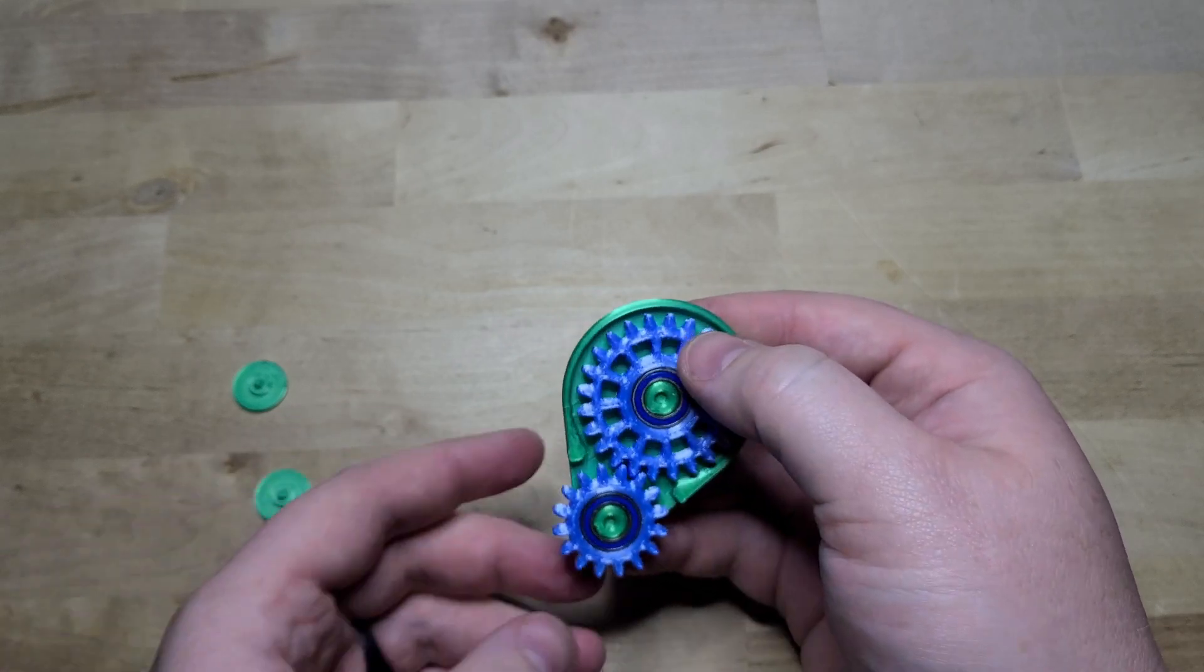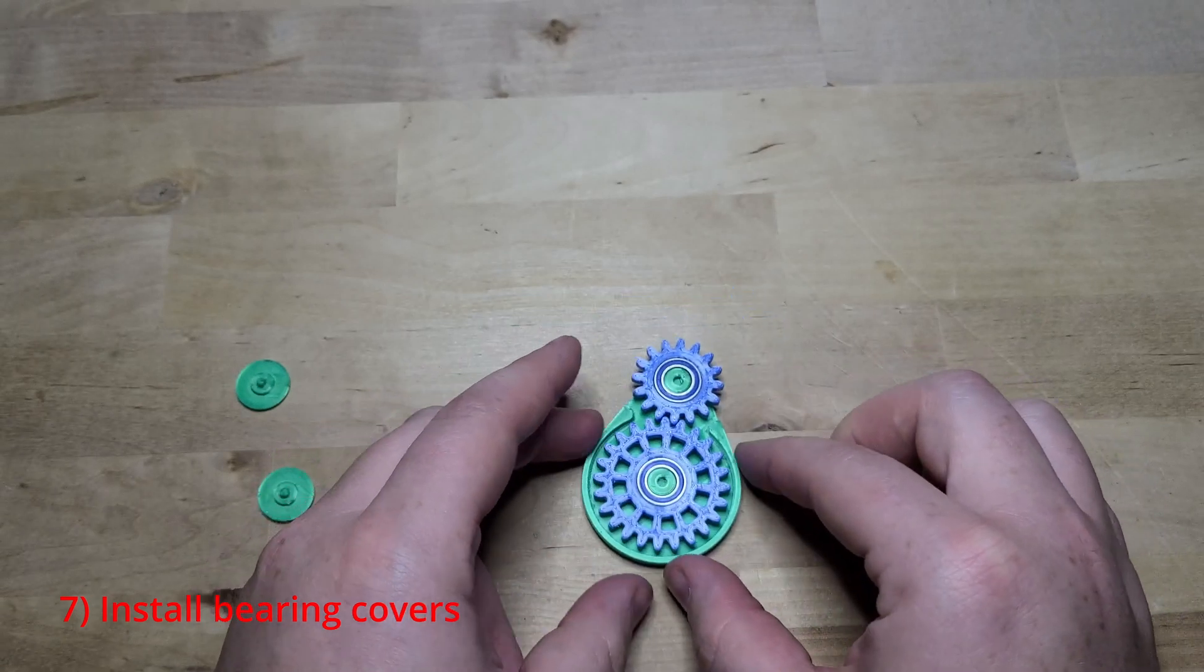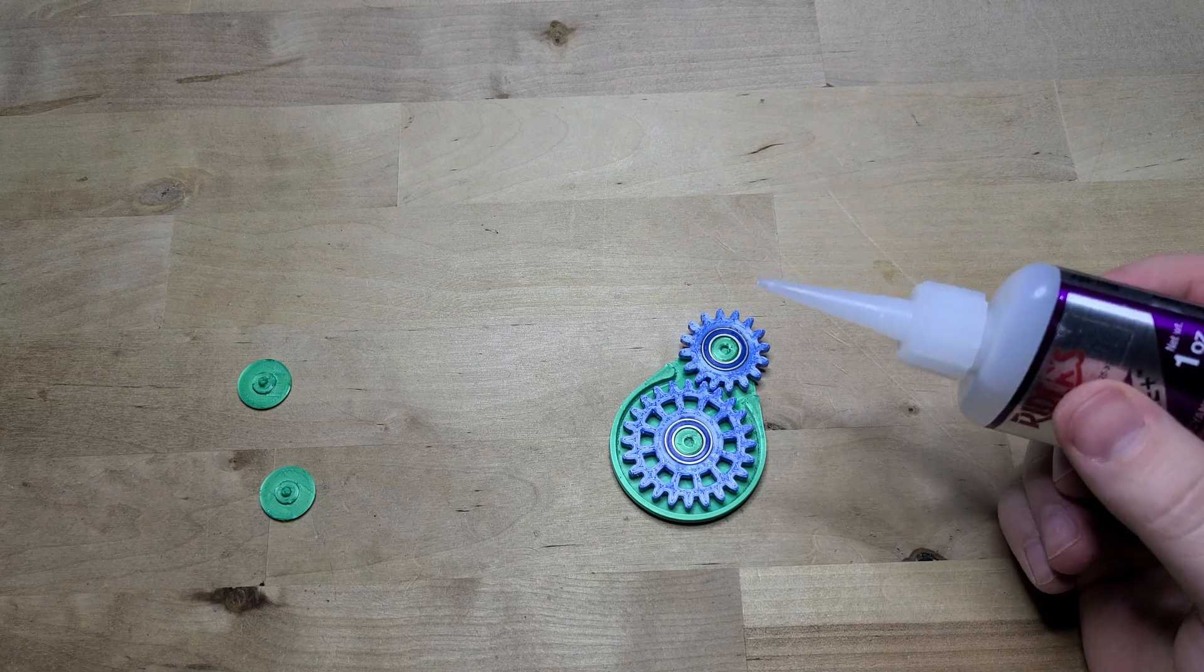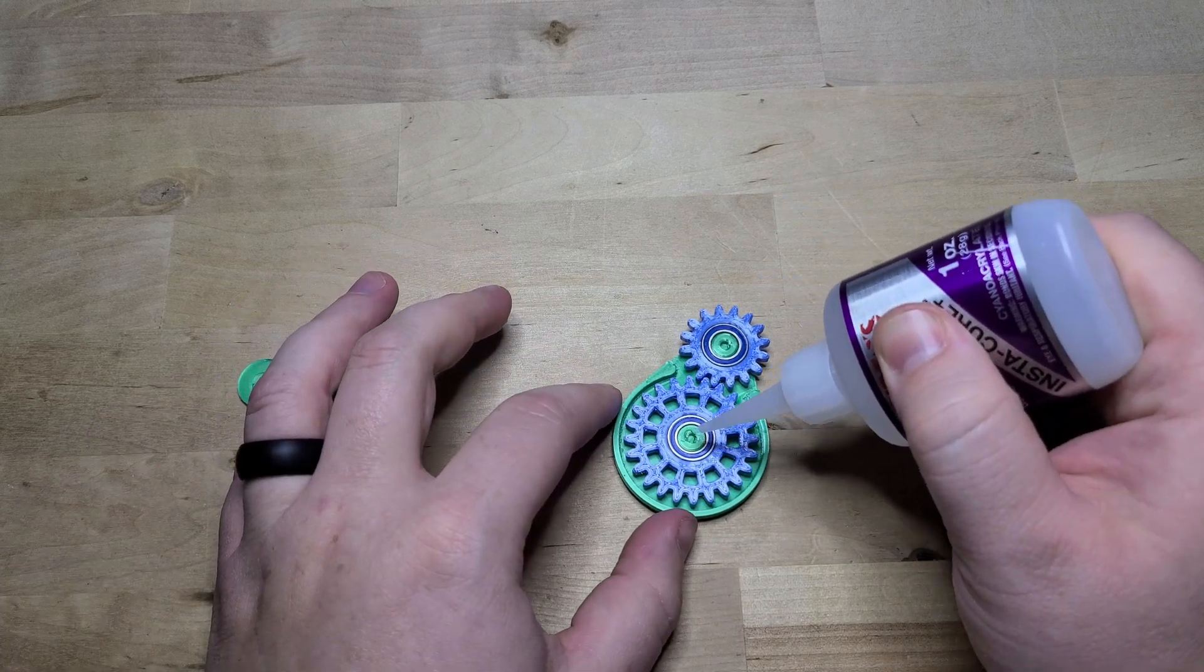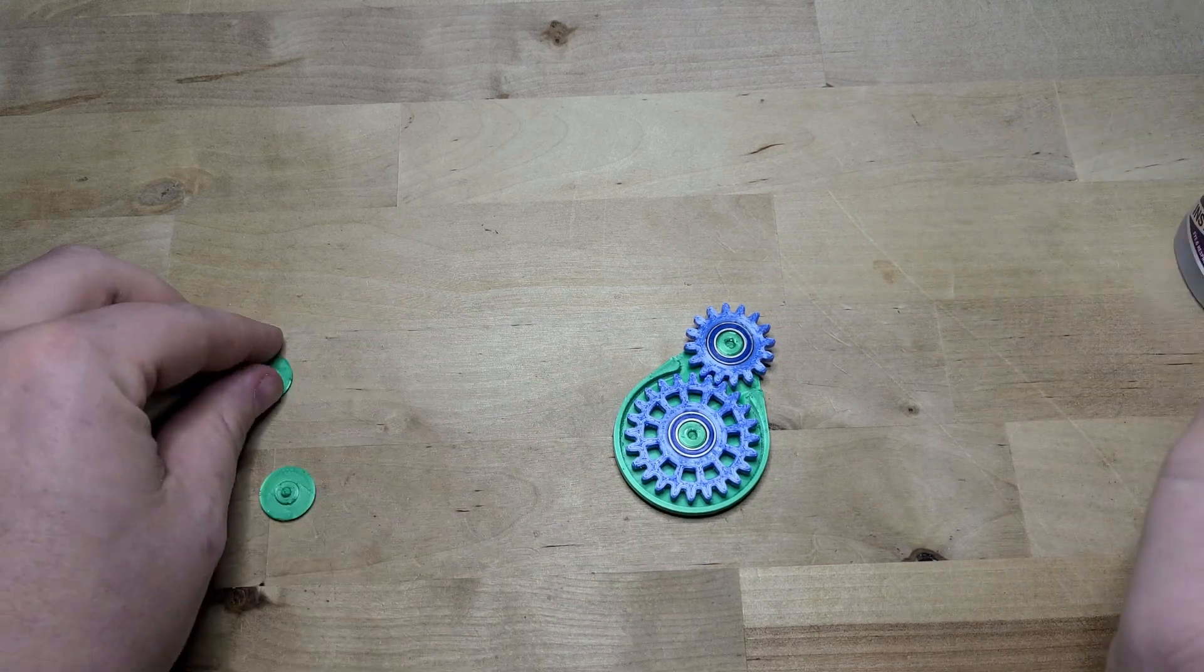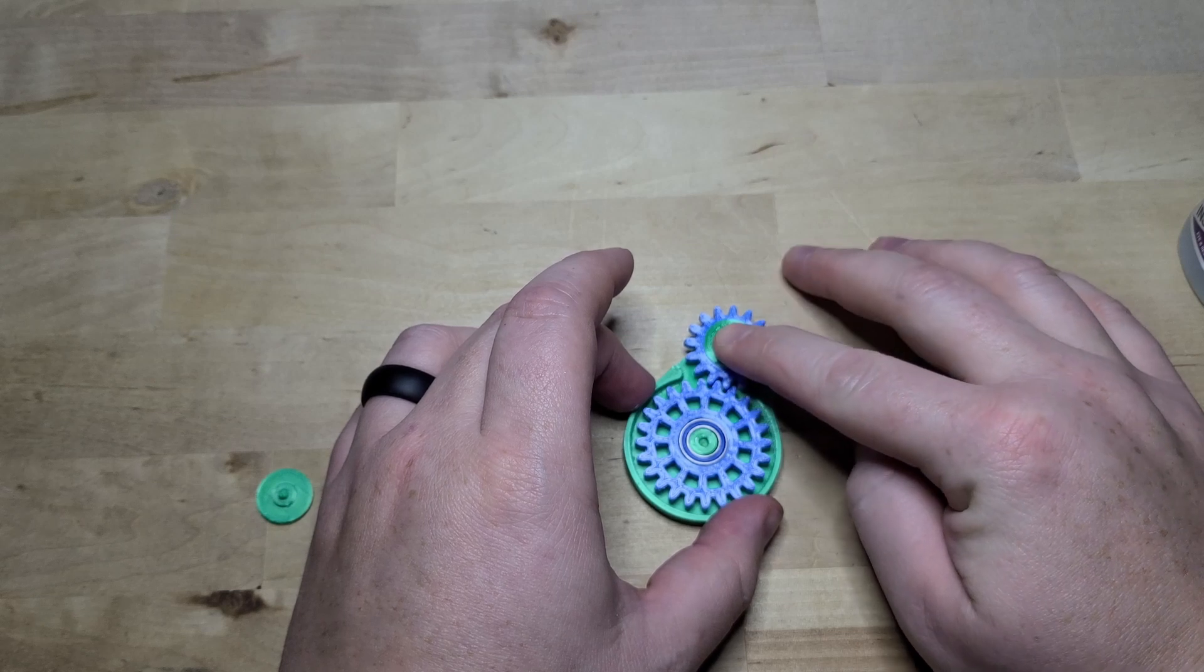Now it's time to install the bearing covers. If you prefer the look of the fidget toy without the bearing covers, skip this step. Apply a dot of glue into the centering hole, insert the cover, and apply pressure while the glue dries.